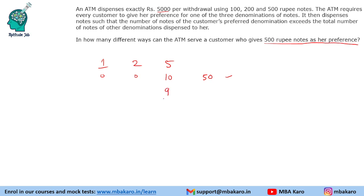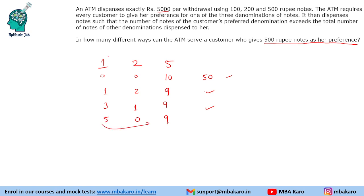If the customer prefers 500-rupee notes and we give 9 of them, that covers ₹4500, so we need to distribute ₹500 more. We can give 2 notes of 200 and 1 note of 100 — that is satisfied. We can also have 1 note of 200 and 3 notes of 100 — also satisfied. Or 9 notes of 500, no note of 200 and 5 notes of 100. The total of other notes (5 + 0 = 5) is less than 9, so that is satisfied.